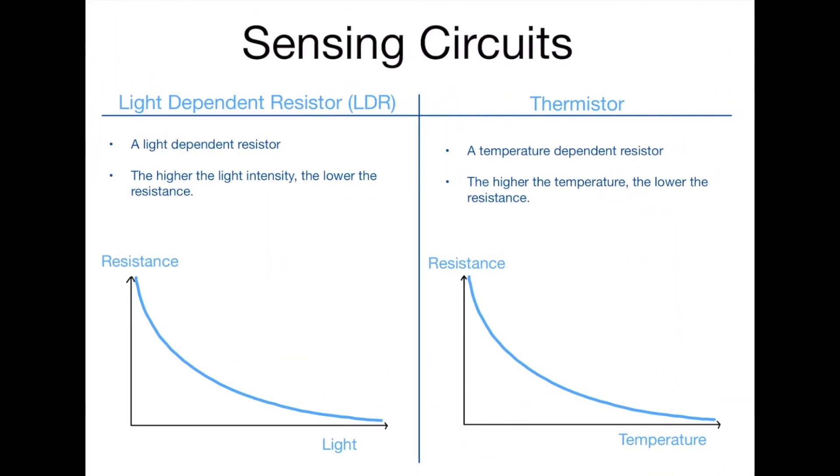Sensing circuits. A light-dependent resistor is a resistor that depends on light, believe it or not, and a thermistor is a resistor that depends on temperature. Thermistor, thermometer, temperature, that's one way to remember those. With both of these, the higher the light intensity or the higher the temperature, the lower the resistance is. Now, the best way to remember this, rather than remembering those sentences, just remember what the graph looks like. Because as soon as you can remember and replicate that graph, the words will kind of come naturally. You can see on this graph, as the light goes up, the resistance goes down, and likewise for the other one, as the temperature goes up, the resistance goes down. Two very important things to remember for your exams.